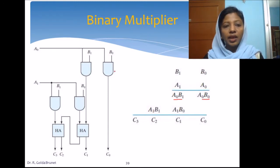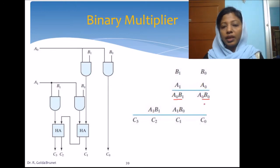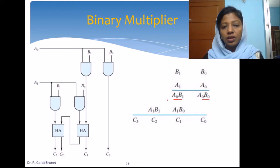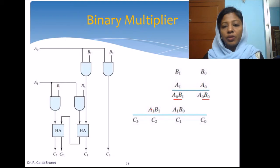We have two AND gates for which we supply the multiplier bit A0 and we make an AND with B0 and B1. This bit we can directly give to the output since there is only one bit. Now this bit we have to add with this one, and to generate this one we need to have two more AND gates which will be making an AND operation between A1 B1 and A1 B0.